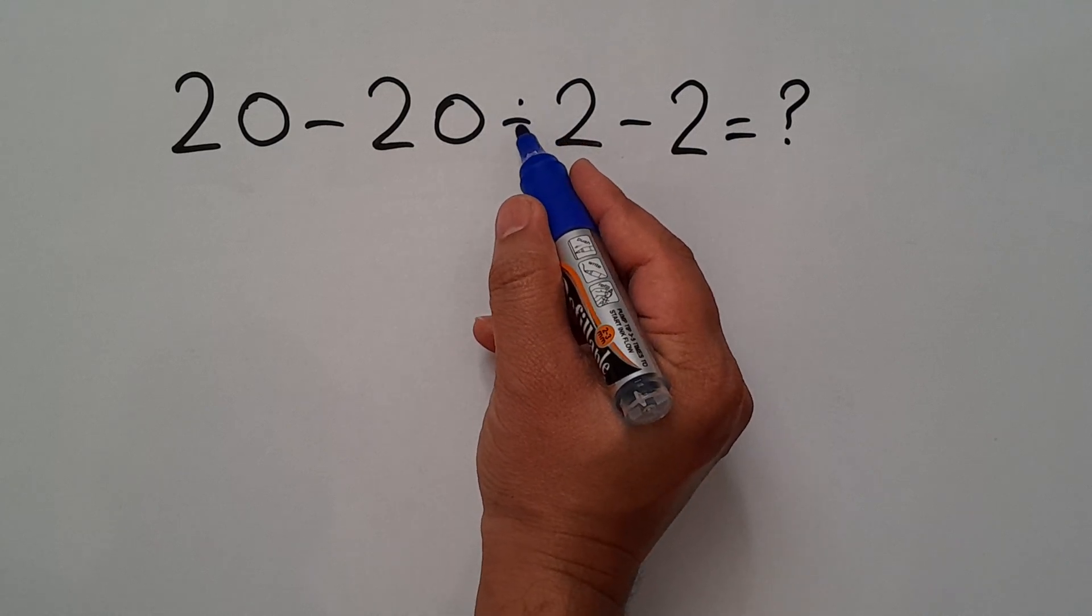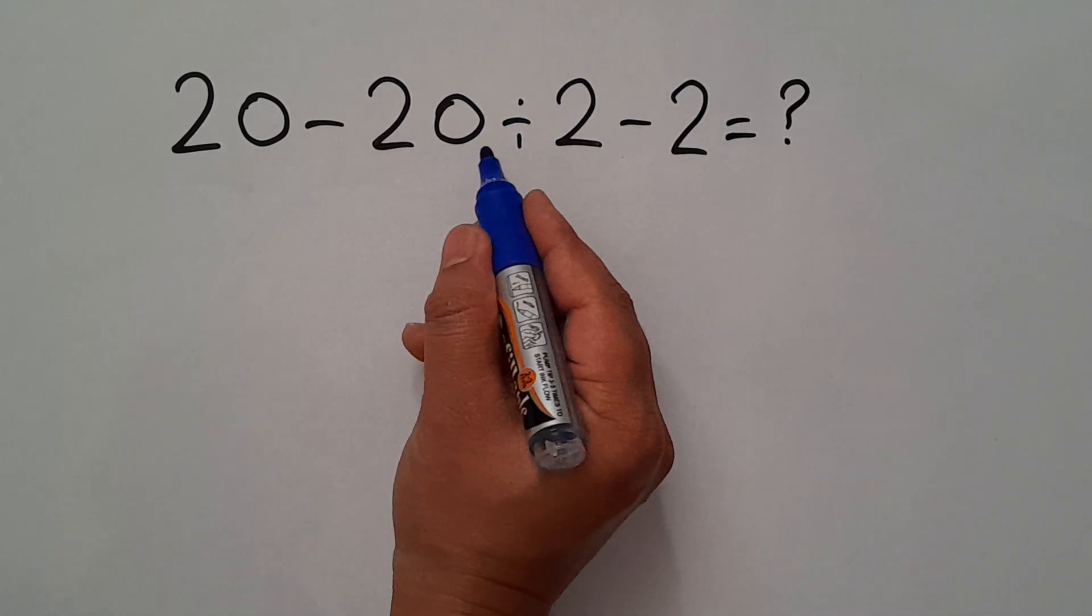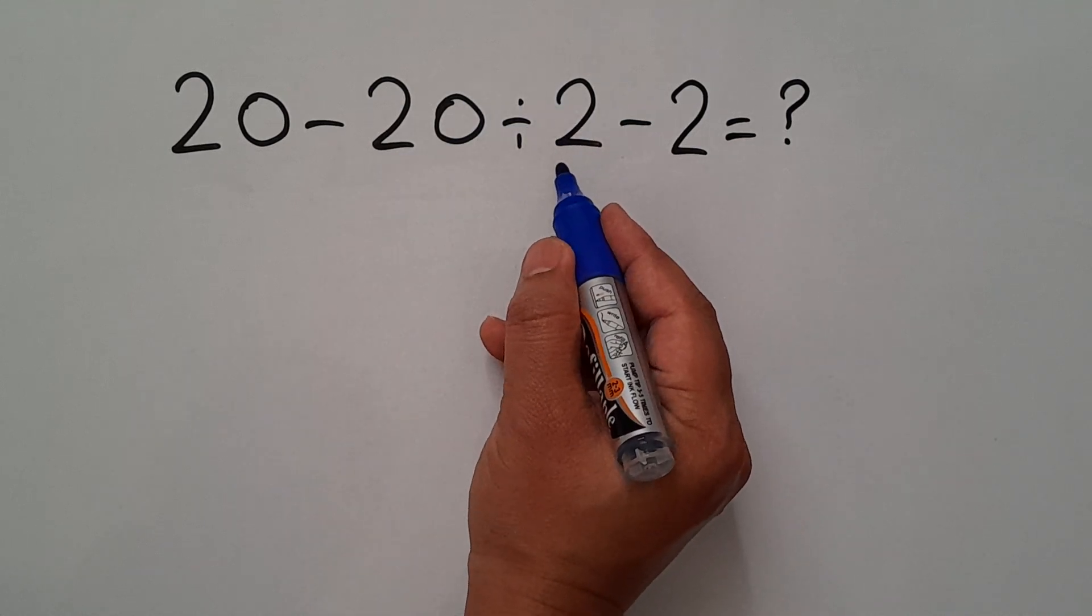So first we have to handle this division. 20 divided by 2 gives us 10.